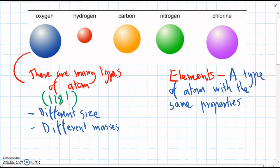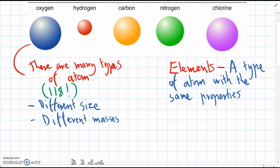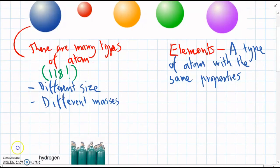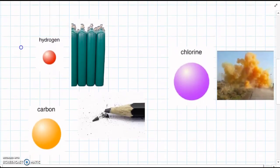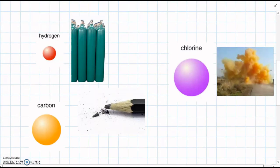Once scientists started discovering lots of different elements, they decided let's give them symbols to make them a bit easier to write, because some of them have really long names. It's easier to just give them a symbol. Here are some common different elements.